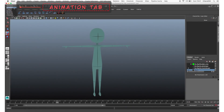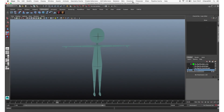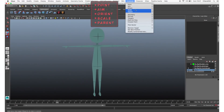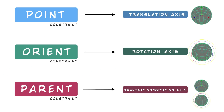In Maya, if you go in the animation tab and then on Constraint, you find different types of constraints: point, aim, orient, scale, and parent. The most used are point, orient, and parent constraint. The difference between these constraints is the axes involved. The point constraint influences the translation axis, orient constraint influences the rotation axis, and the parent constraint influences both translation and rotation.